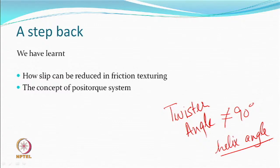We cannot guarantee that the twister angle would be equal to the helix angle. If it is not equal to the helix angle, there is going to be some difference in the force vector. The surface movement direction of the disc and the direction of the surface movement of the yarn will not be the same, and if they are not the same, you can expect slip.